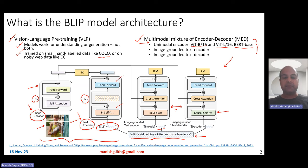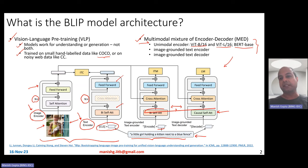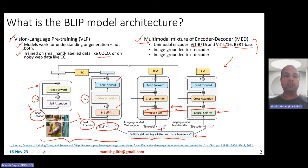That is basically the basic architecture of the BLIP model — it is essentially a transformer architecture with appropriate towers, appropriate self-attention layers corresponding to the appropriate encoder or decoder. Now let's also talk about the pre-training losses. When you pre-train this model using captioning data, what are the losses?